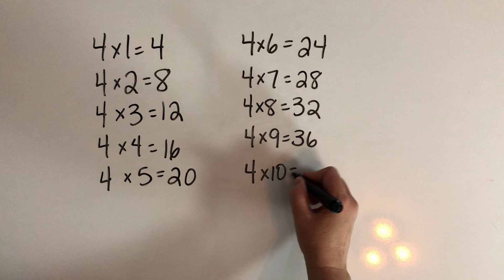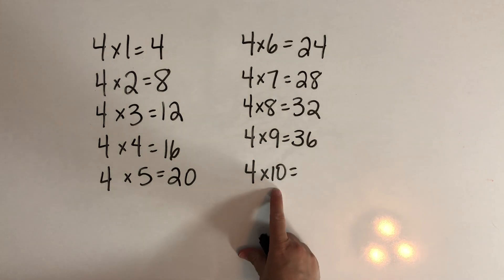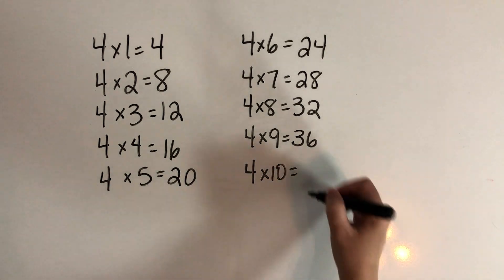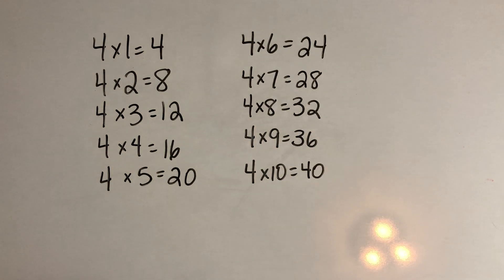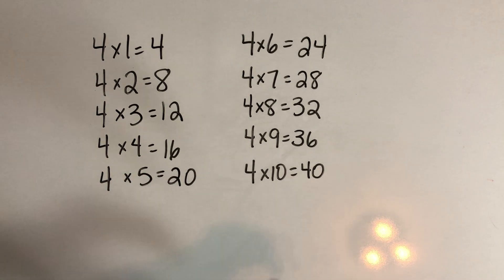And the last one, four times ten. We can double the ten to make twenty and then double the twenty to make forty. So if you ever get stuck on anything times four, remember that you can always take the double and then just double it again.